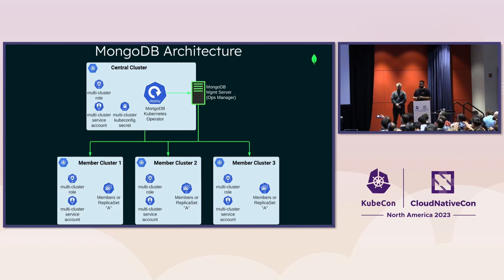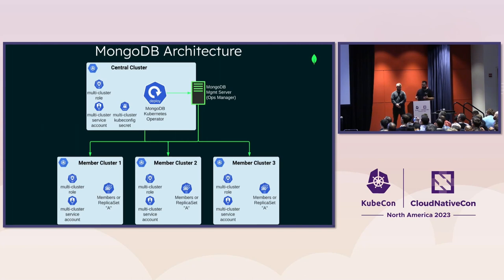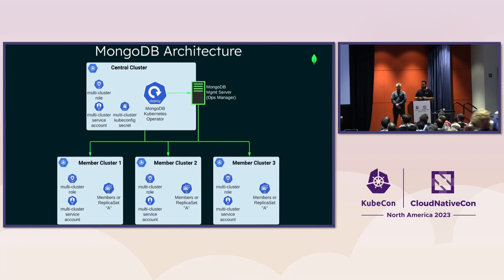For the MongoDB operator, we've chosen the hub cluster pattern. The central cluster hosts the Kubernetes operator and acts as the control plane for multi-cluster deployment. It hosts the MongoDB multi-cluster custom resource in which the operator defines a deployment, and optionally the MongoDB management server — Ops Manager. It can also host members of the MongoDB deployments, such as a replica from a replica set. Member clusters only host MongoDB replica sets. While the data plane is already resilient to cluster failure, we're currently working on making it easier to recover both our operator and Ops Manager to another cluster, which will make disaster recovery quicker and easier.